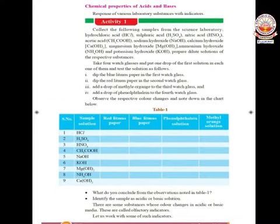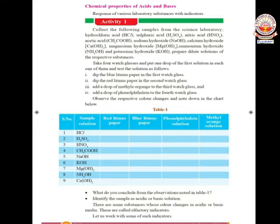Let us see the chemical properties of acids and bases. The first reaction is the reaction of acids and bases with metals. Hydrochloric acid reacts with zinc metal to form zinc chloride and hydrogen gas. Hydrogen gas is liberated and a salt, zinc chloride, is formed.